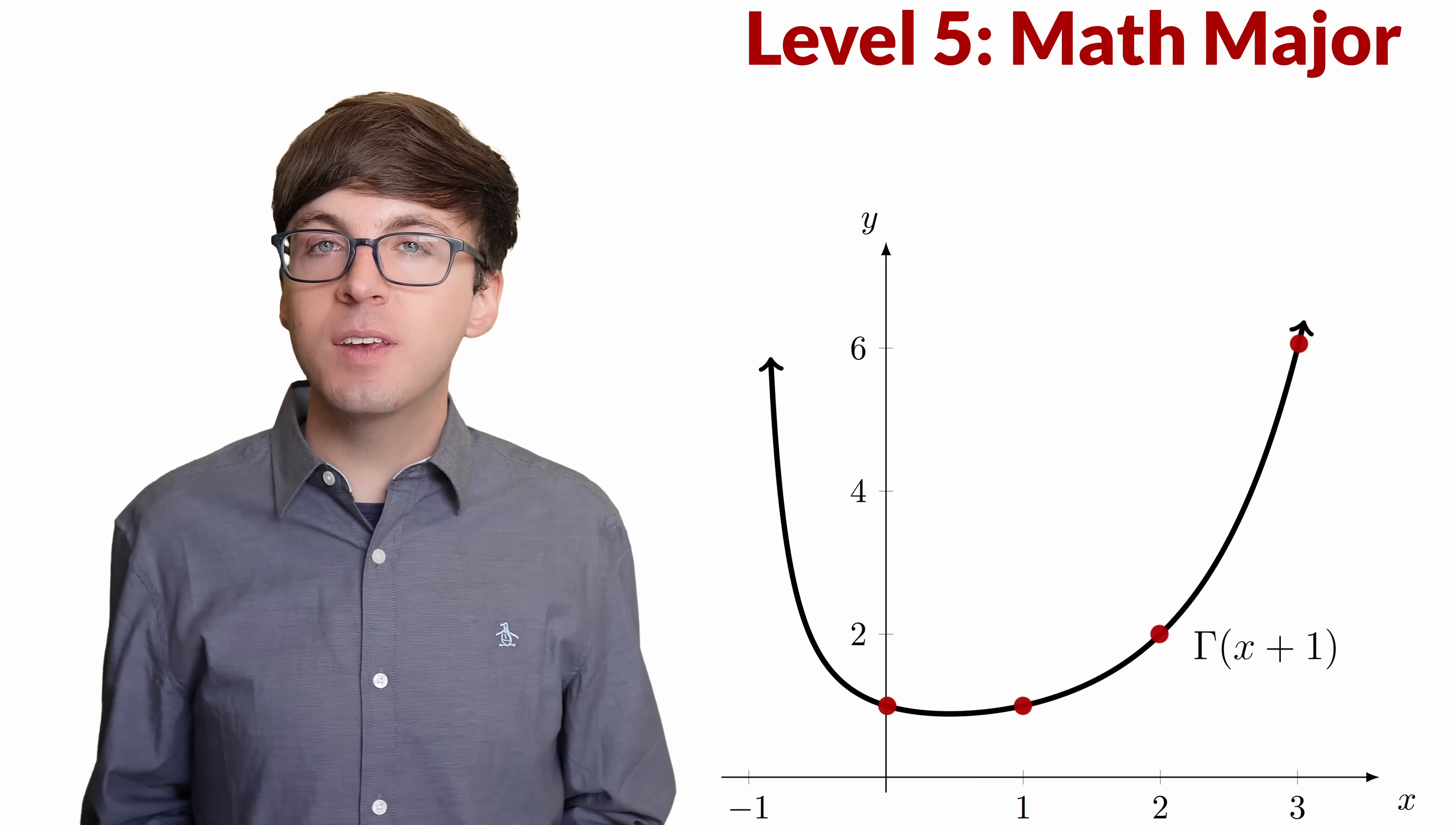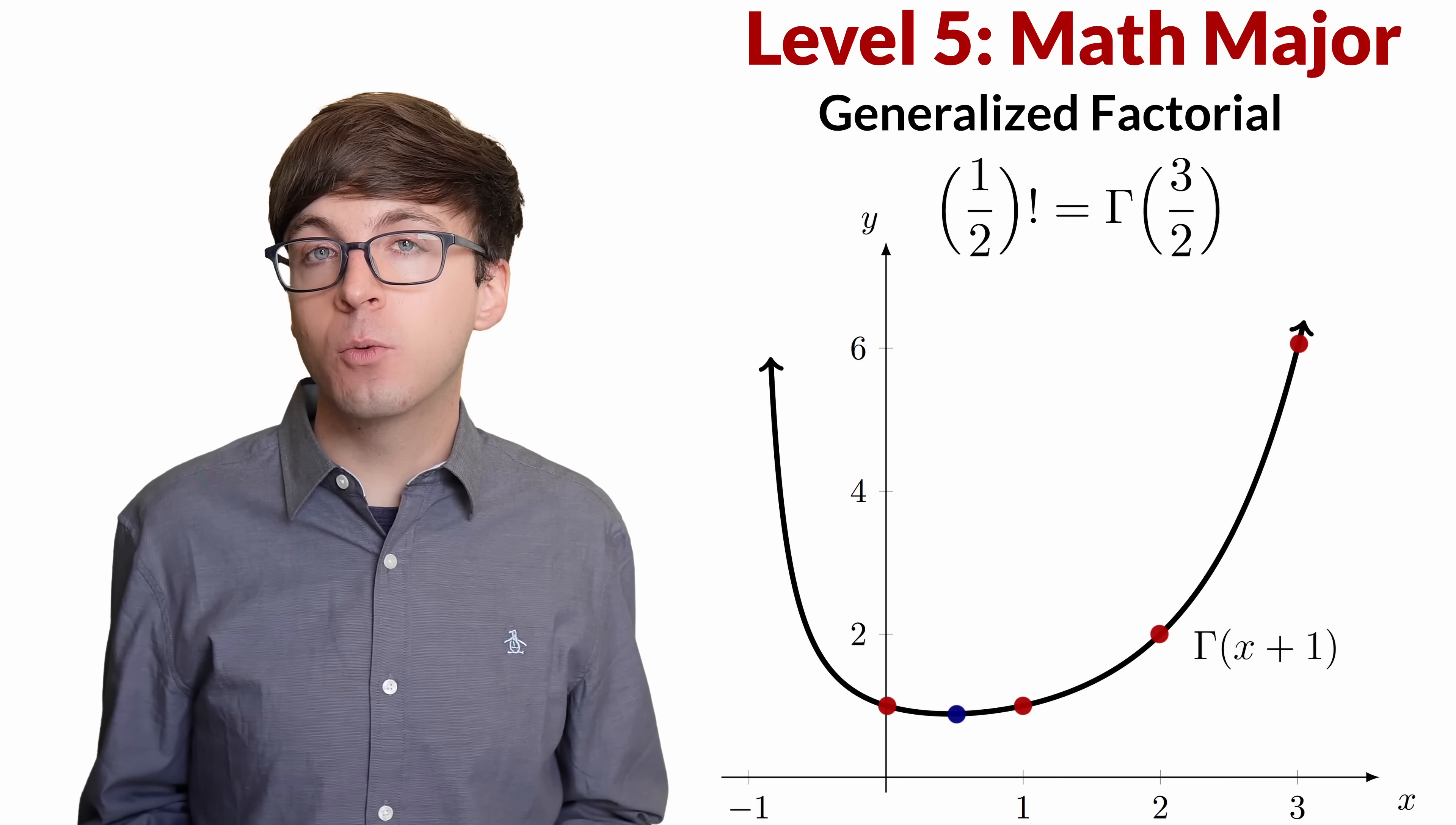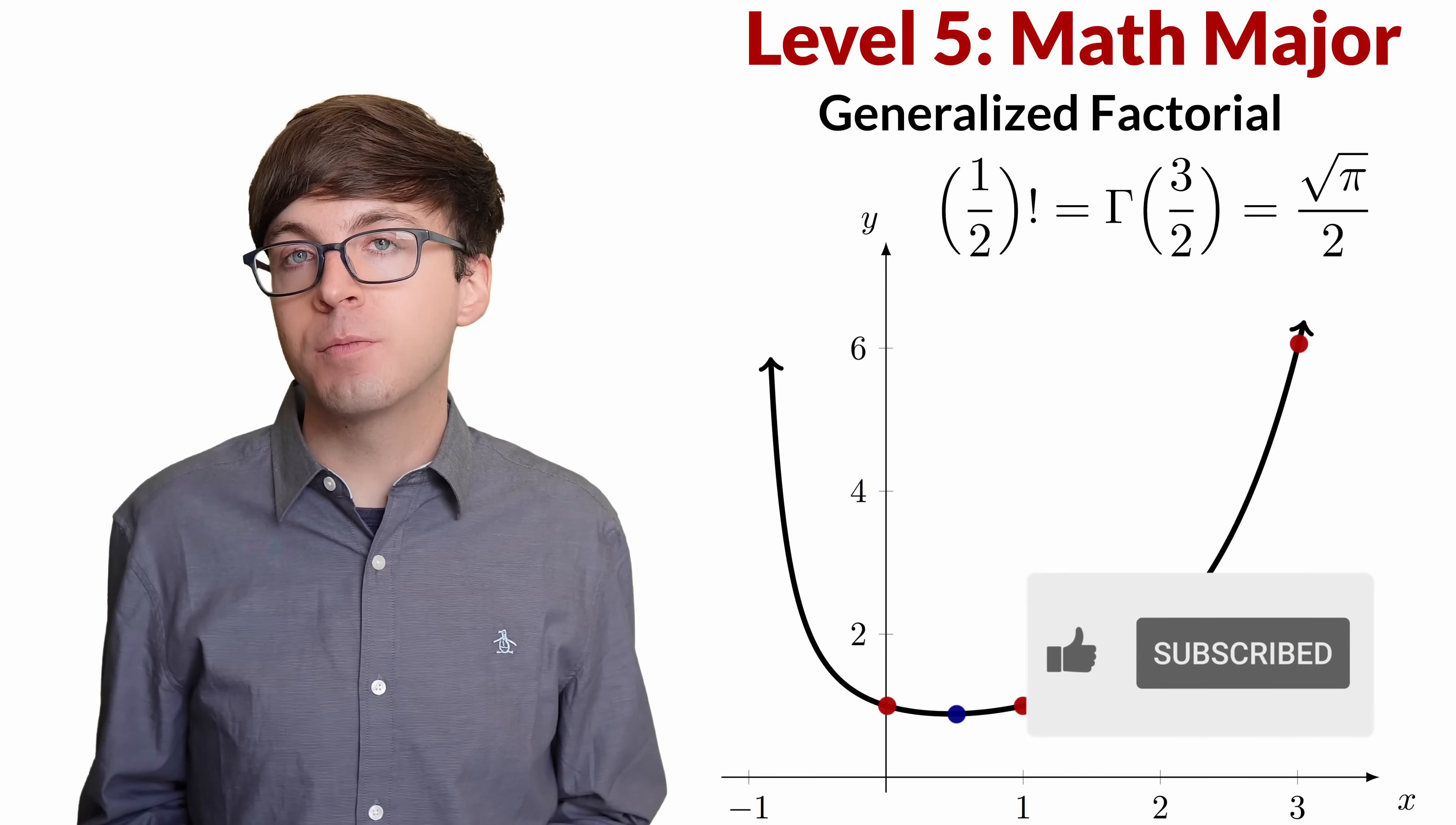We can also use the gamma function to define a generalized factorial of other real numbers. For example, if we want a generalized factorial of 1 half, we can say that that's equal to gamma of 3 halves, which it turns out is the square root of pi over 2. This is why some math software like Wolfram Alpha, for example, will evaluate 1 half factorial as the square root of pi over 2.